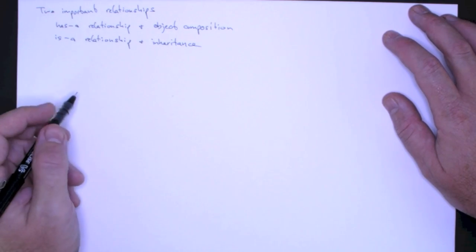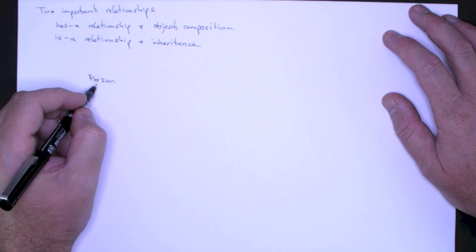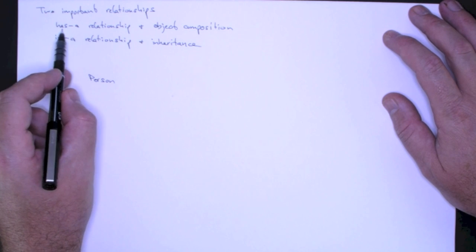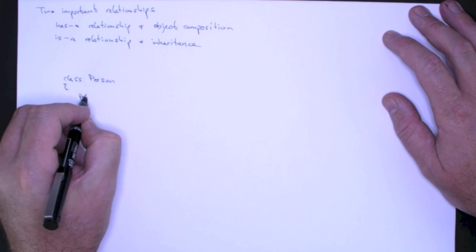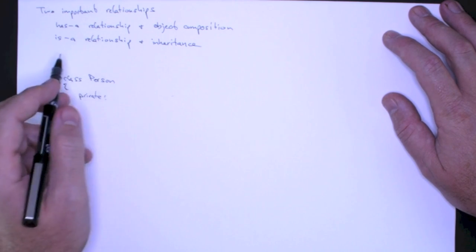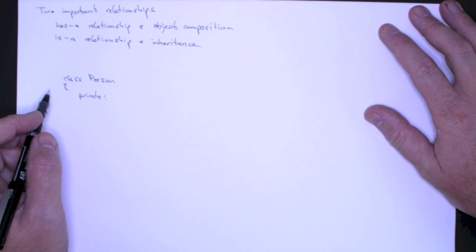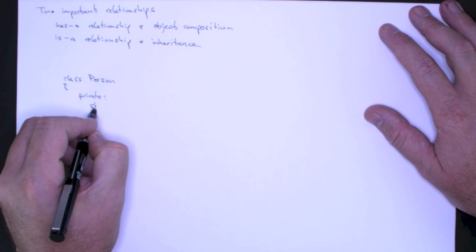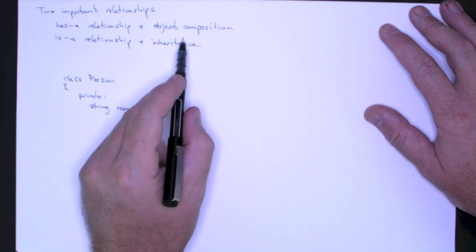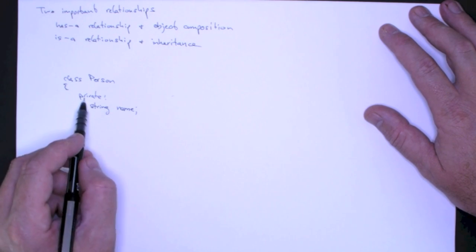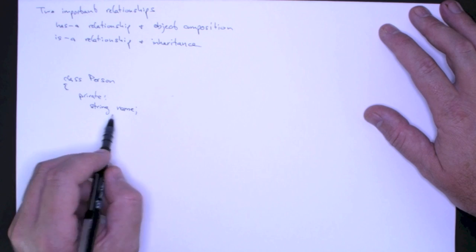Let's say, for example, we have a Person. This would be a class that we implement, and a person has a set of properties. When we define these properties as private data members, we're using object composition. The person's name, for example—the person has a name, and by declaring that name as a private data member, we're composing the person object using the string class and the name object.